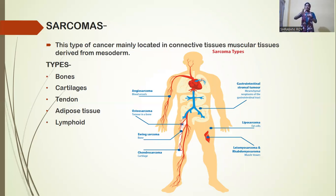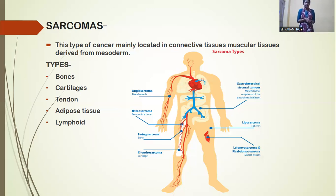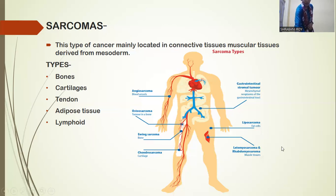Sarcoma cancer occurs in the middle portion, which we call mesoderm. It occurs in bones, cartilage, tendons, adipose tissue, and lymphoid tissue. Here I have added some pictures to help understand this type of cancer.